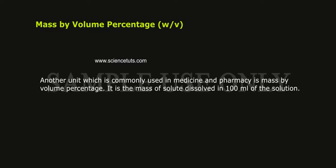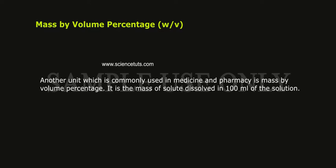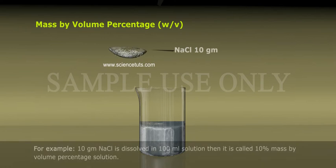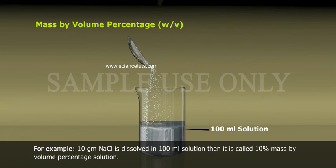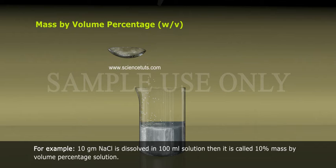Mass by Volume Percentage (W/V): Another unit commonly used in medicine and pharmacy is mass by volume percentage. It is defined as the mass of solute dissolved in 100 ml of the solution. For example, 10 grams of NaCl dissolved in 100 ml solution is called a 10% mass by volume percentage solution.